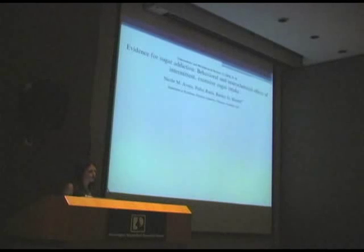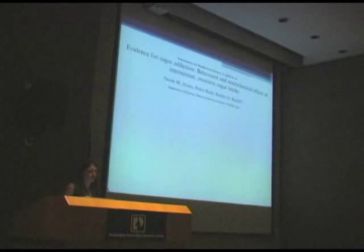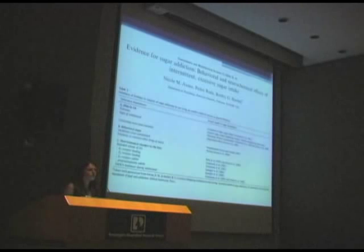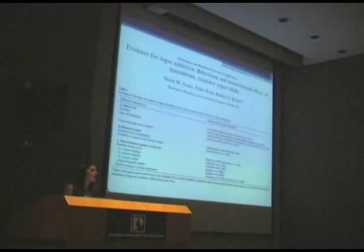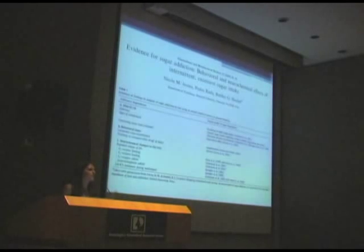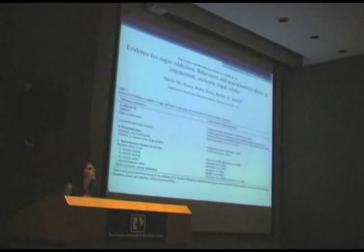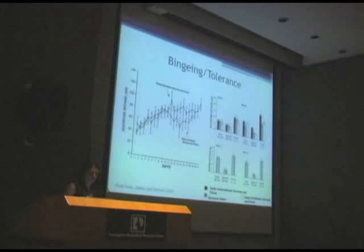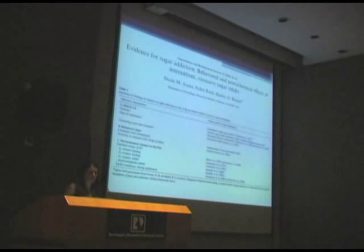A lot of this work started when I was a graduate student and has been reviewed in a paper I wrote with Bart Hoble when I was at Princeton. We started off looking at animals that were binging on sugar or overeating sugar — focusing on one single nutrient at first to understand and characterize whether or not animals could become dependent on these different criteria when over-consuming sugar. These findings are summarized in that review paper for anyone interested.